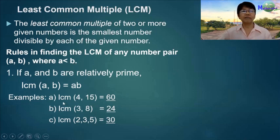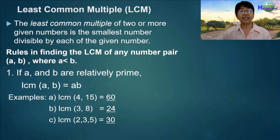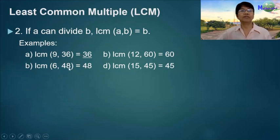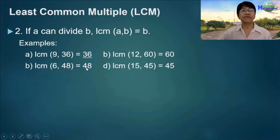Examples: letter A — 4 and 15 are relatively prime, so the LCM is 60. Letter B — 3 times 8, the LCM is 24. Letter C — 2 times 3 times 5, the LCM is 30. Rule 2: if A can divide B, the LCM of A and B is equal to B. So 9 and 36: since 9 can divide 36, the LCM is 36. Letter B: 6 can divide 48, LCM is 48. Letter C: LCM of 12 and 60 is 60. Letter D: LCM of 15 and 45 is 45.